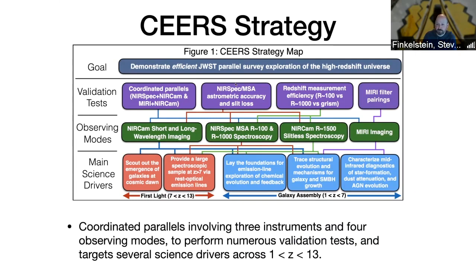It also has different MIRI filter pairings — you'll see in our layout we have six different MIRI pointings and they don't all have the same filters. Our observing modes with NIRCAM are short and long wavelength imaging and R=1500 slitless spectroscopy, which is very different from the very low resolution slitless spectroscopy you're used to with Hubble, and that presents its own benefits and challenges. With NIRSpec, we're using the MSA with both the R=1000 grating and the R=100 prism. The NIRSpec GTO team is covering our field with R=2700 spectroscopy, so ultimately you'll have that as well. And finally, MIRI imaging.